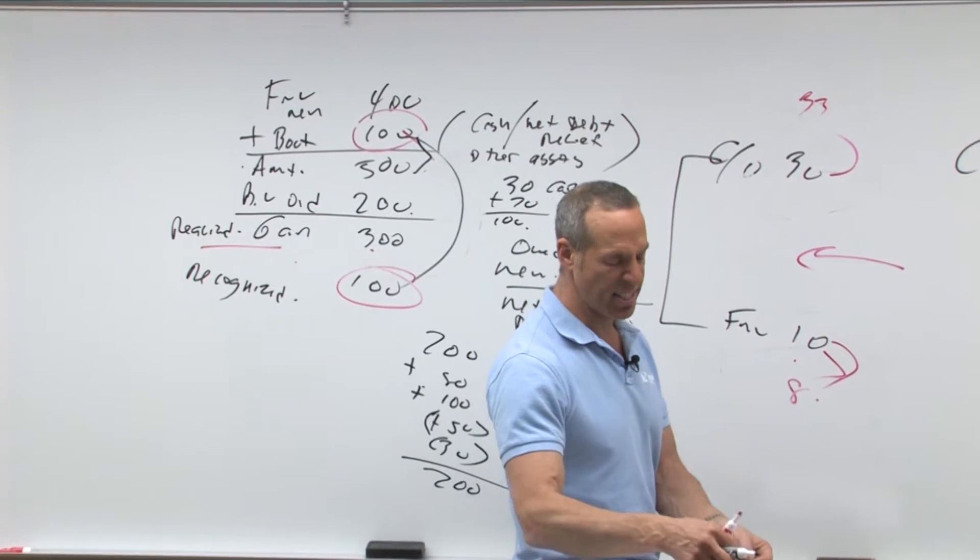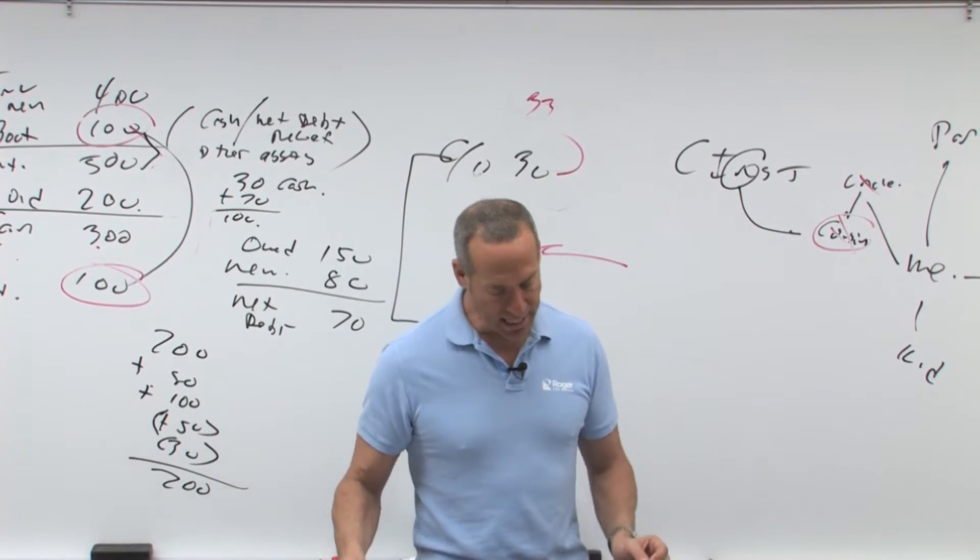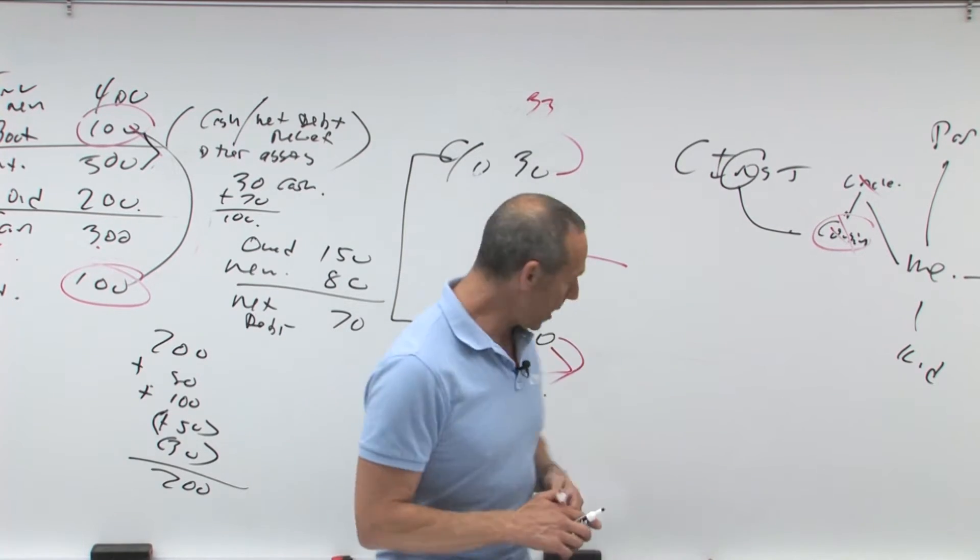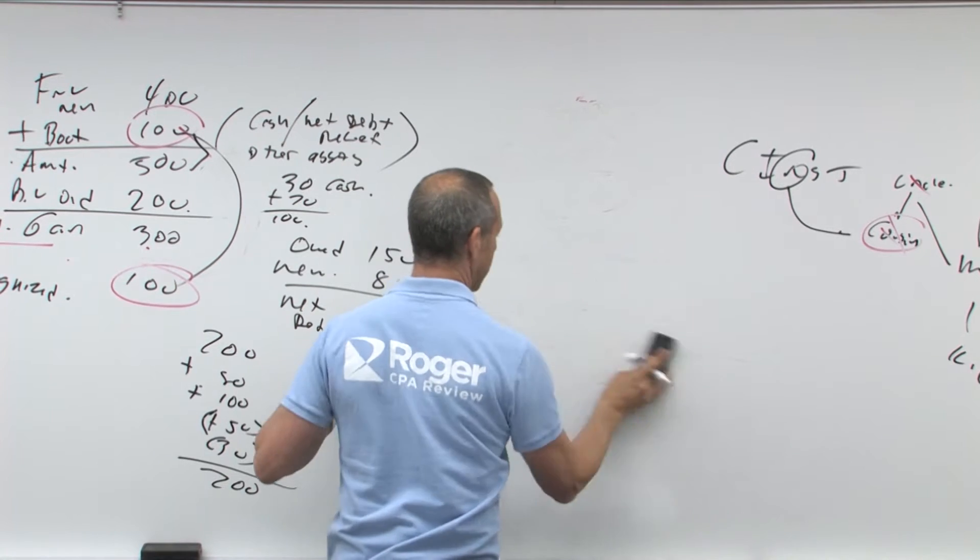So if they ever ask you what's the basis, we'll do a problem on that a little bit later. All right, the next item we're looking, here's your journal entry by the way. Let's do that journal entry. What's the journal entry?